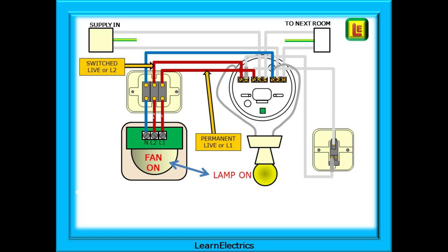There are two lives or phases to connect. The permanent live is taken from the live loop in the ceiling rose, through the switch, and into the first of the live terminals on the fan, marked here as L1. The switch live comes from the ceiling rose, through the switch, and into the second live terminal on the fan, marked L2. Then the neutral from the ceiling rose, through the switch, and into the N on the fan. Finally, make the necessary CPC or earth terminations.